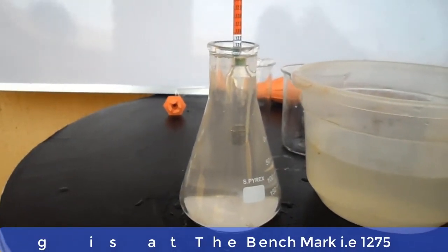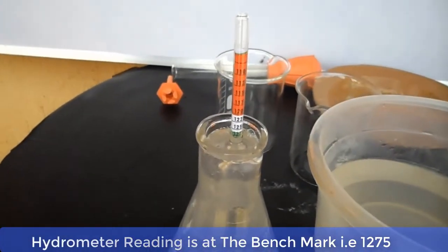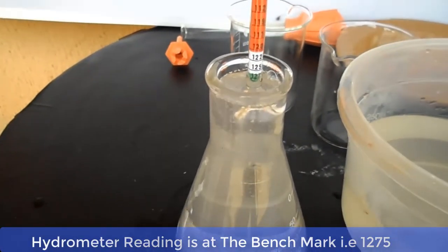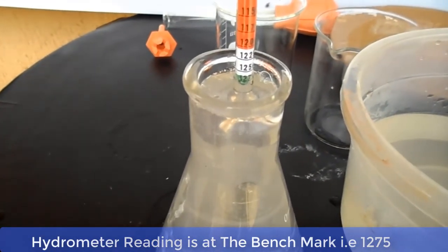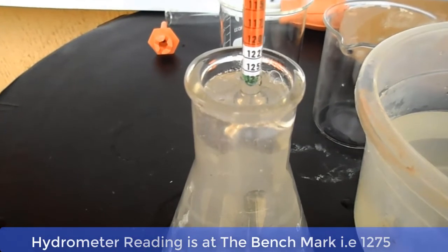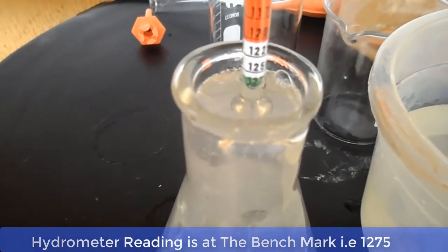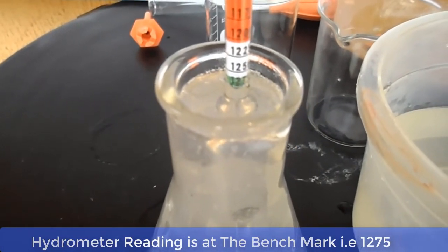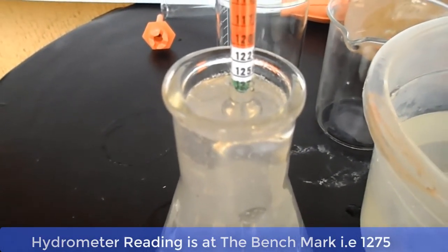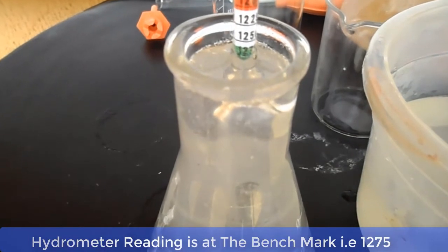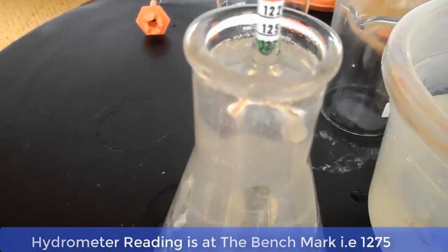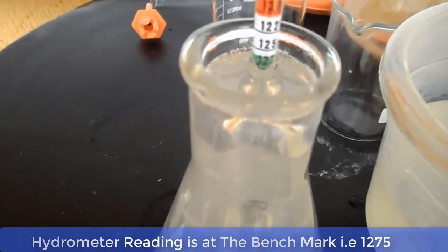And now, ladies and gentlemen, we have hit our benchmark for the specific gravity required for bar soap making, which is 1275. The hydrometer is at the green marking and it is reading 1275. This was attained by adjusting the volume of the water and also the caustic soda until we hit the benchmark.